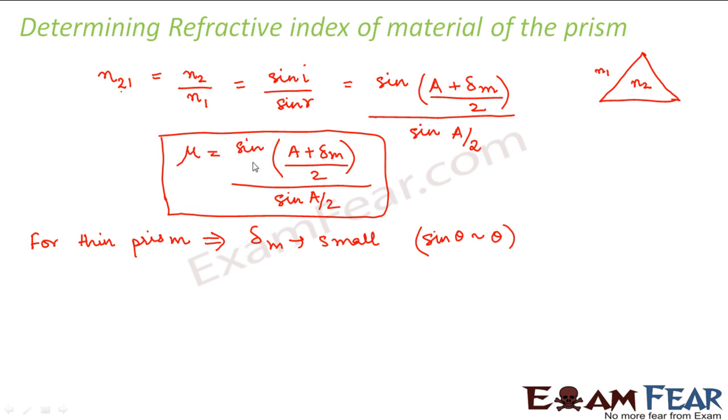right? So in that case sin of (a plus delta m) by 2 will be equal to (a plus delta m) divided by 2. This divided by a by 2.